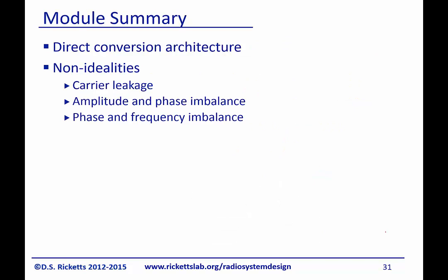This concludes the module on direct conversion transmission. We talked about the direct conversion architecture and three non-idealities: carrier leakage, which caused the constellation to shift as a whole while keeping its shape; amplitude and phase imbalance, which caused a distortion around the center; and phase and frequency imbalance, which caused a blurring of the constellation due to variations in both the phase and frequency of the carrier.